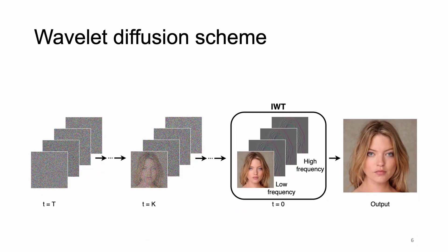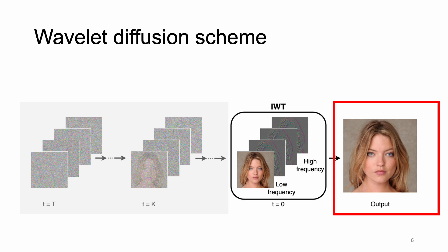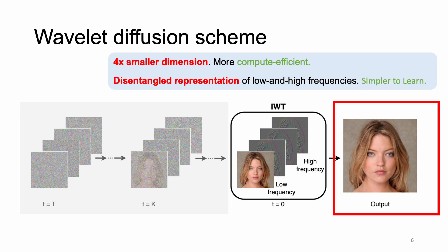Moving to our proposal, let's begin by introducing a wavelet diffusion scheme that integrates the wavelet transform into the diffusion process for more efficient sampling. Instead of synthesizing the image as a whole, our diffusion model learns to generate a stack of its four wavelet subbands. After T sampling steps, the output image is reconstructed via inverse wavelet transformation. Performing denoising on wavelet space has two key advantages: first, its spatial dimension is four times smaller than the original image dimension; second, the model can benefit from the disentangled representation of wavelet subbands.